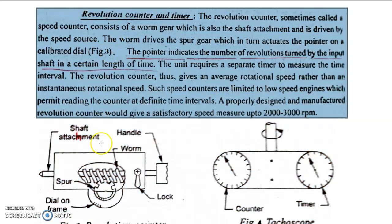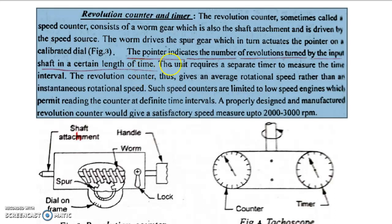The worm drives the spur gear, which in turn actuates the pointer on the calibrated dial. If there is a rotation in the shaft, the worm will move and the gear structure will rotate accordingly. The pointer indicates the number of revolutions turned by the input shaft in a certain length of time.